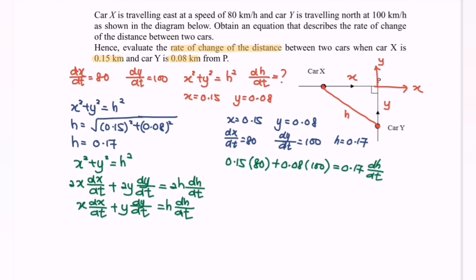So finally, dh/dt equals 12 + 8 over 0.17. So finally, we will have 20 over 0.17. Then, dh/dt equals 117.6 kilometer per hour.